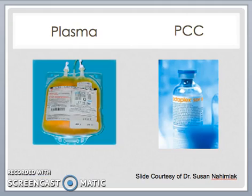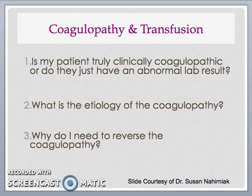Now let's move on to plasma and prothrombin complex concentrate, also known as PCC. In coagulopathy and transfusion, it is important to always consider: Is my patient truly clinically coagulopathic or do they just have an abnormal lab result? What is the etiology of the coagulopathy? Remember to draw all necessary tests before treatment. And finally, why do I need to reverse the coagulopathy in the first place? If reversing pre-procedure, what is the most appropriate timing? And if secondary to anticoagulation, what are the risks of reversal and when should anticoagulation be restarted?